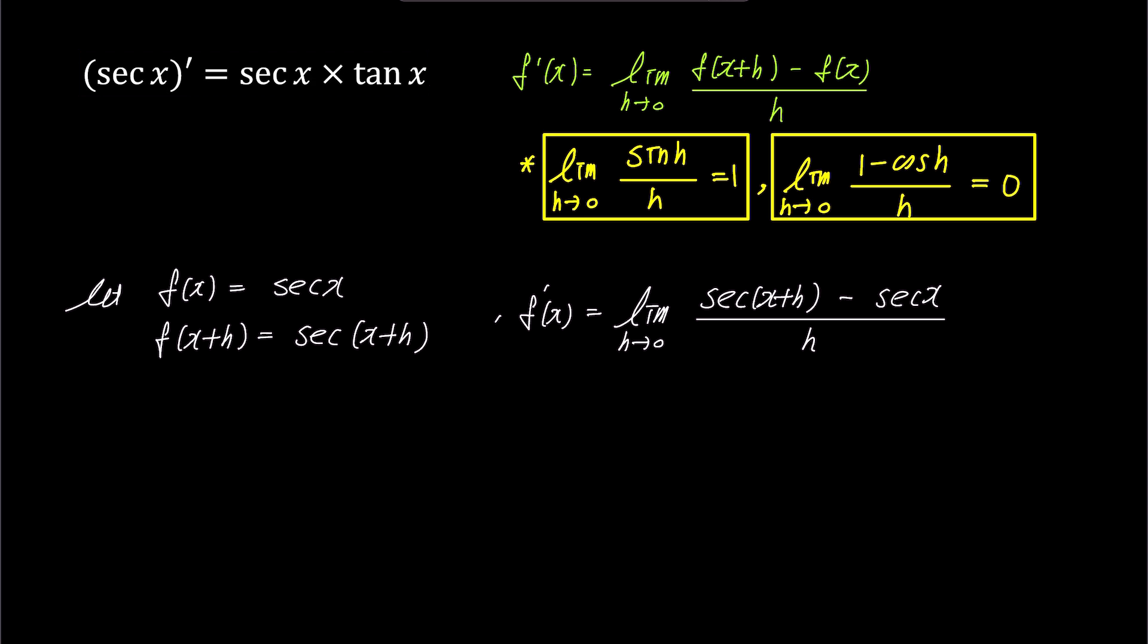If we replace secant x with 1 over cosine x, the numerator of this limit becomes 1 over cosine x plus h minus 1 over cosine x, and the denominator remains h.